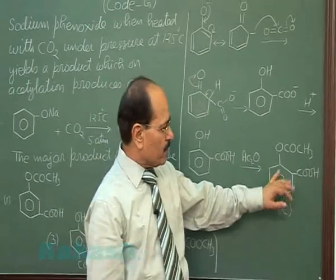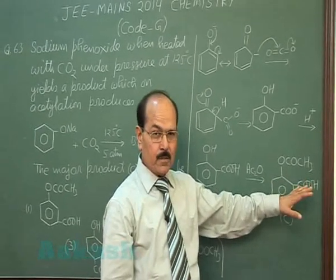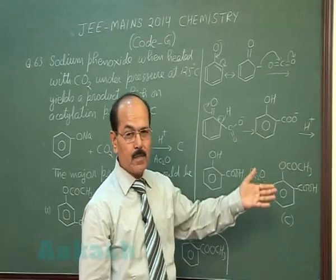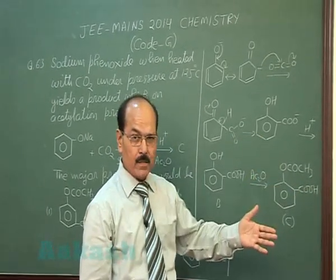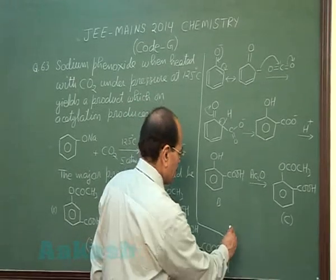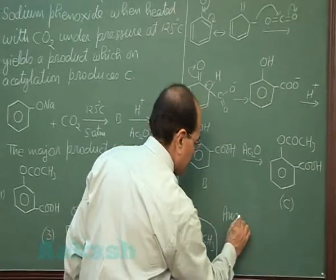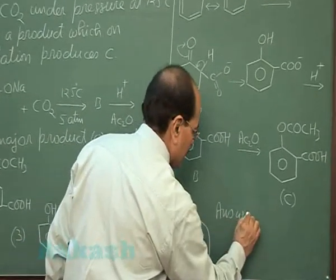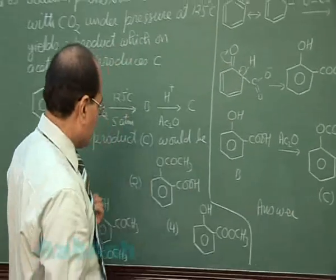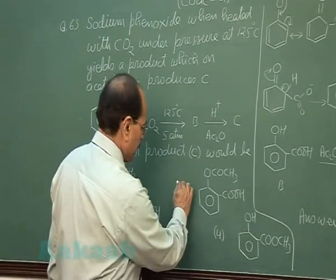The major product formed is the ortho isomer, and the minor product is the para isomer. So from the four options given, the correct answer is option 2.